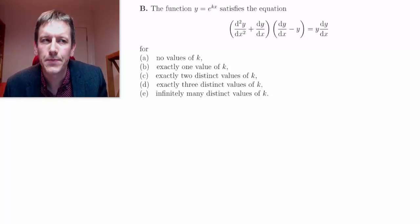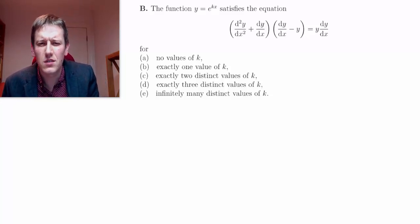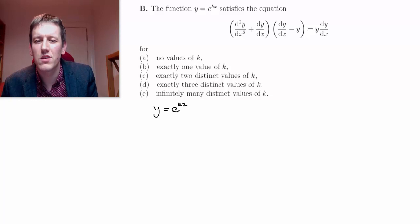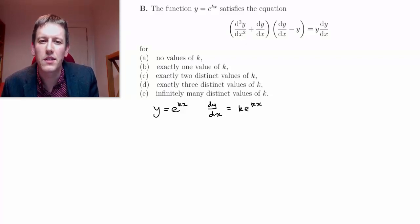We've got a lot of options here. So it looks a little bit strange at first, but then you think the function y equals e to the kx. Actually, the derivatives are very nice. So dy by dx is just k e to the k times x, applying the chain rule, which you will know for this paper.